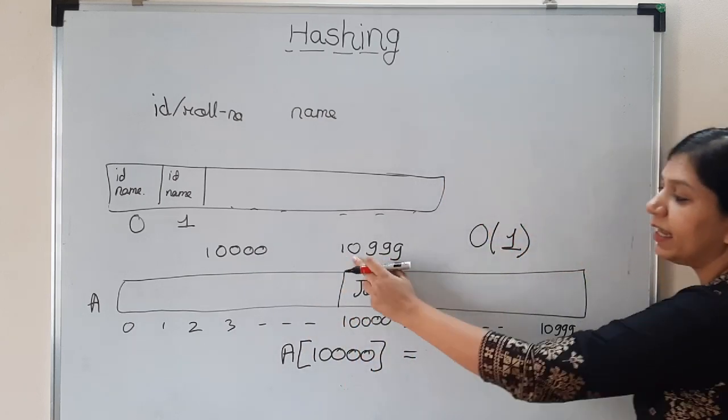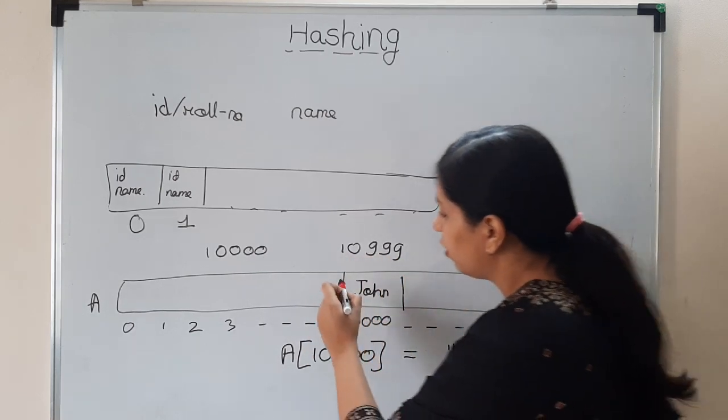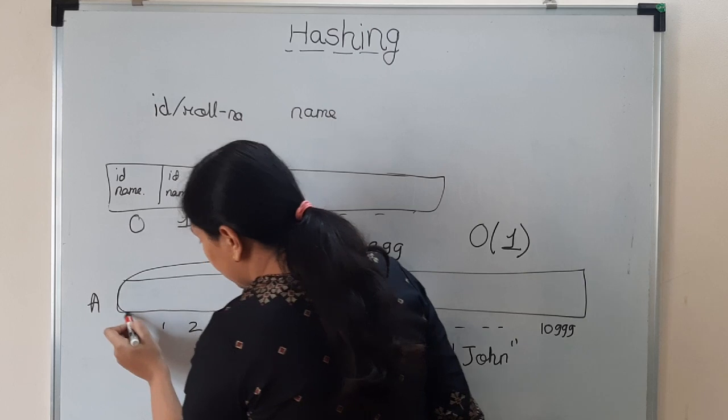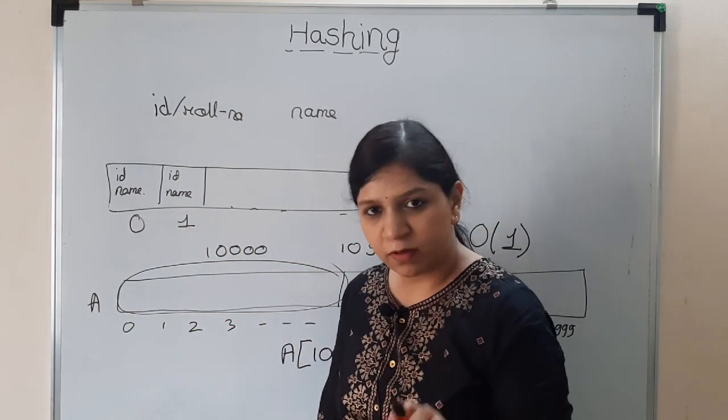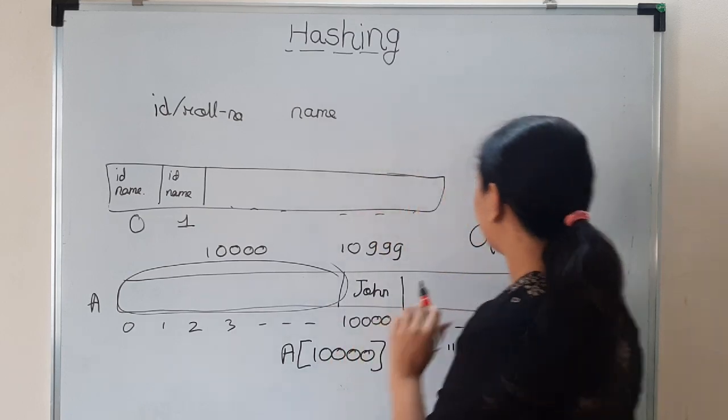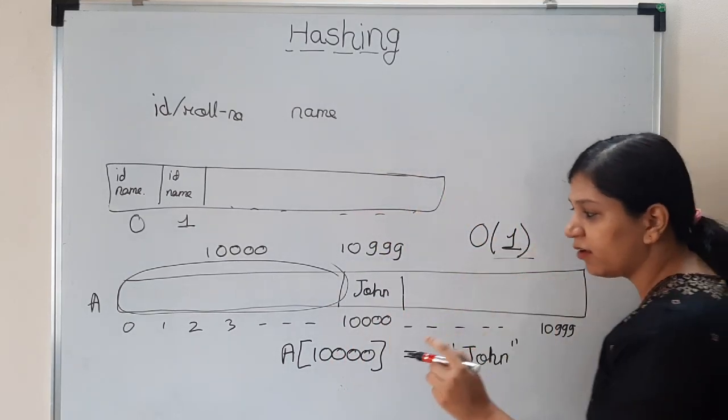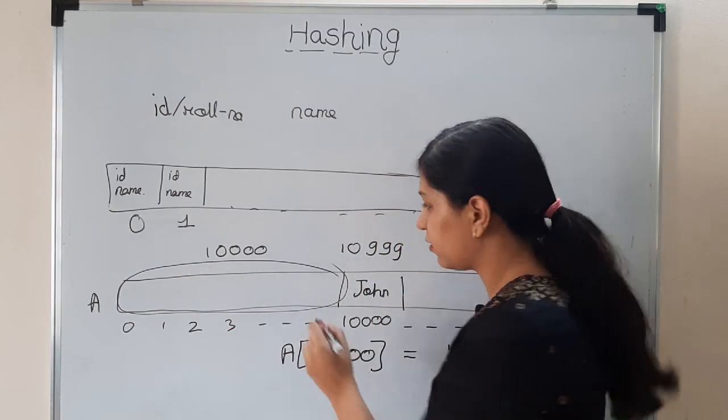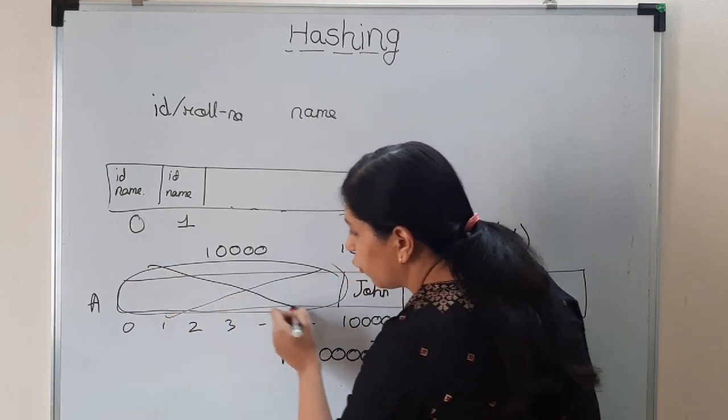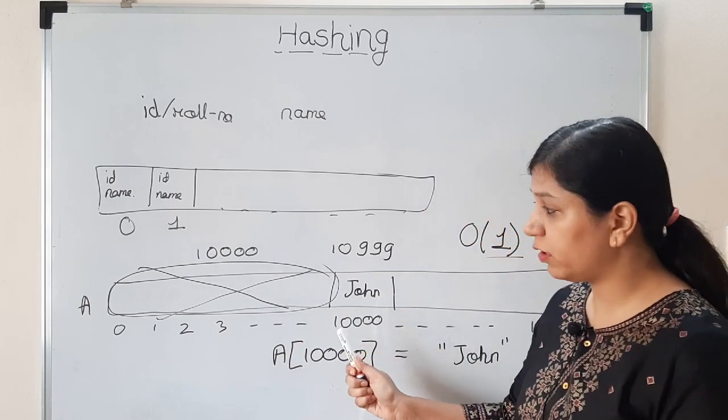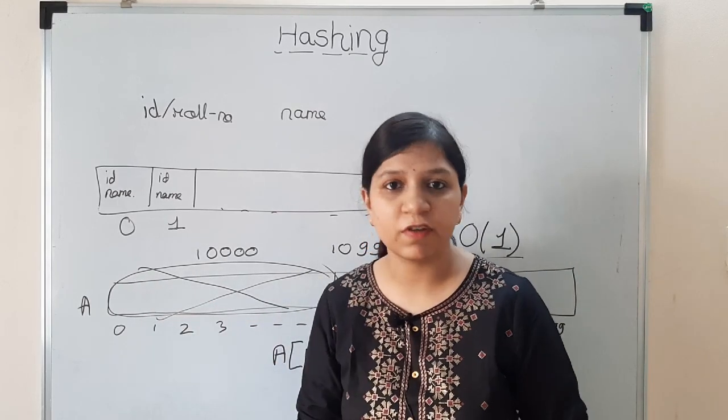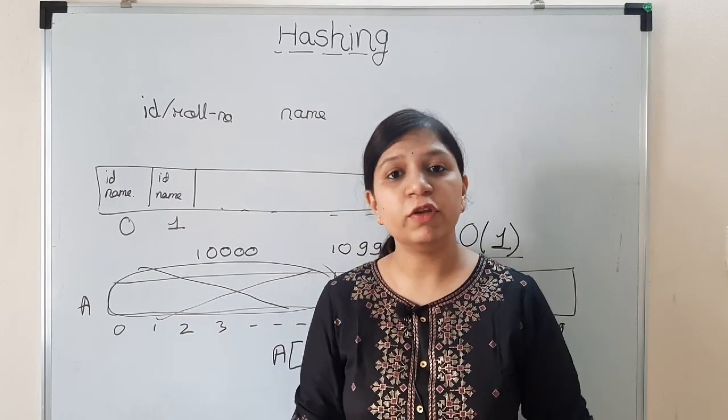Now what are the pros and cons of it? Let's discuss. You can see one thing: roll numbers are starting from 10,000 and going to 10,999, so all this space is going to be wasted, right? Of course you are getting the result in O(1) time, but space also matters. This space is getting wasted.